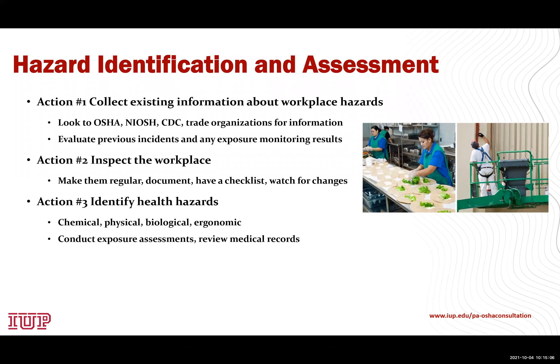Identifying health hazards can be trickier than safety hazards. Health hazards include chemical, physical, biological, and ergonomic hazards. For chemical hazards, review your safety data sheets. For physical hazards, look at excessive noise and sources of radiation. For biological hazards, determine if there are sources of infectious diseases or molds. Also identify ergonomic risks such as lifting activities, repetitive motion, or significant vibration issues. Conduct exposure assessments to evaluate noise and airborne hazards, and review medical records to identify cases of musculoskeletal injuries, skin irritation, dermatitis, or hearing loss.